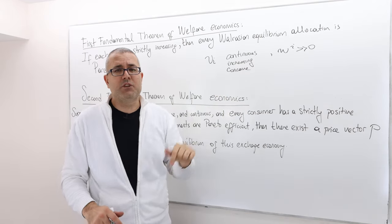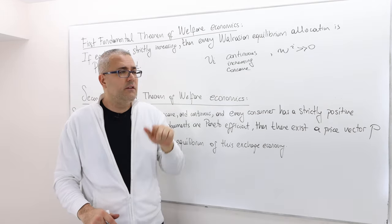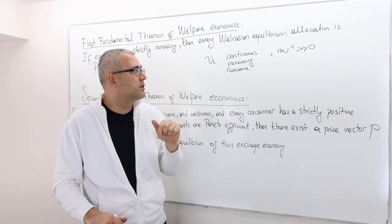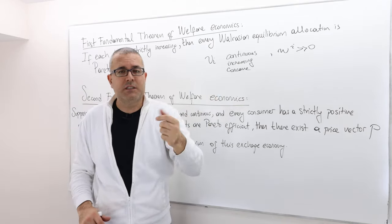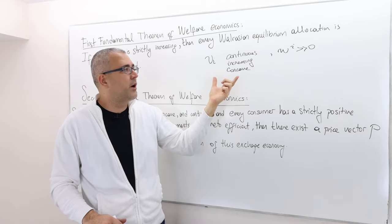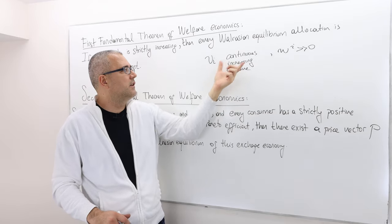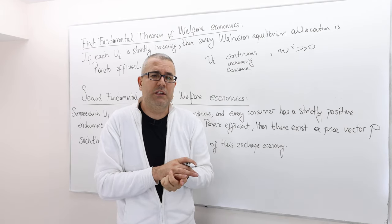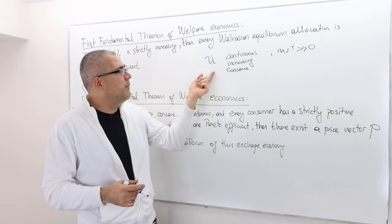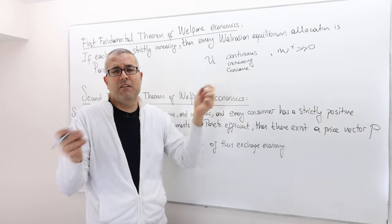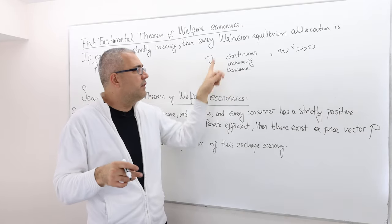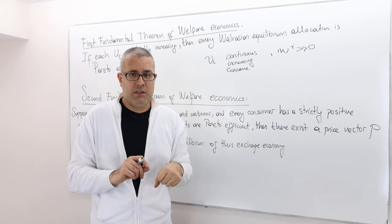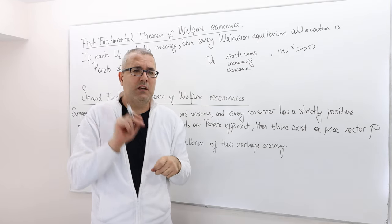Otherwise, if one of those assumptions fails to hold — for example, if initial endowments are zero even though preferences are continuous, increasing, and concave — we may fail to reach a Walrasian equilibrium outcome. Or if we have a non-concave utility function, even with other assumptions holding, we may not get a Walrasian equilibrium. Those examples are coming up.